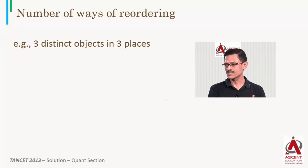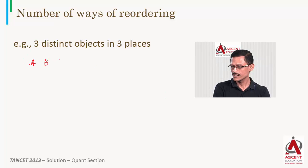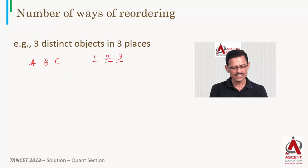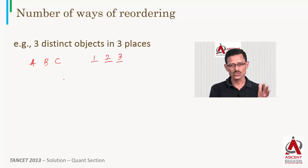Let's take one simple example: three distinct objects A, B, and C. We are trying to reorder these three objects into three places — 1, 2, and 3. Think of it as three chairs numbered 1, 2, and 3, and three students A, B, C who have to be seated in these three chairs such that all three chairs are occupied.